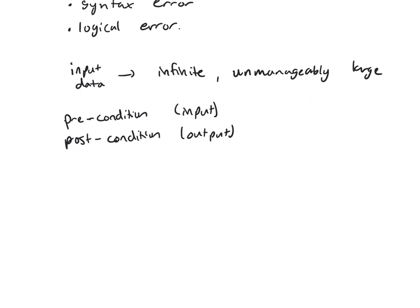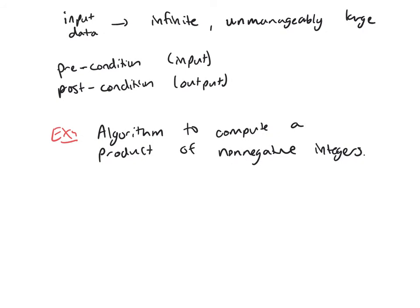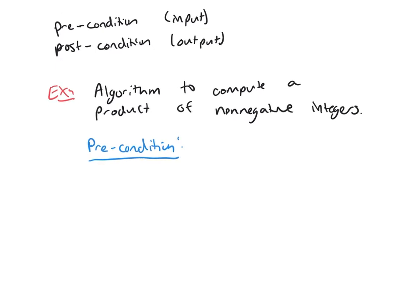Let's look at an example. Let's say my algorithm is going to compute a product of nonnegative integers. So what would my precondition be? What do you input into this algorithm? Well, you put in two nonnegative integers. So we need variables.